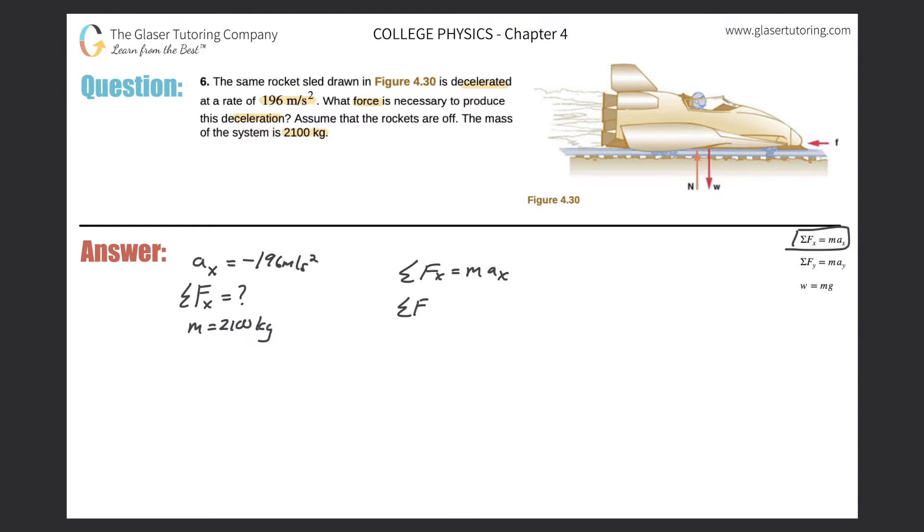So the sum of all the forces in the x should equal the mass of 2,100 kilograms multiplied by negative 196. All right, great. So simply take out your calculator now and plug that on in. So 2,100 times negative 196. What am I talking about, guys?